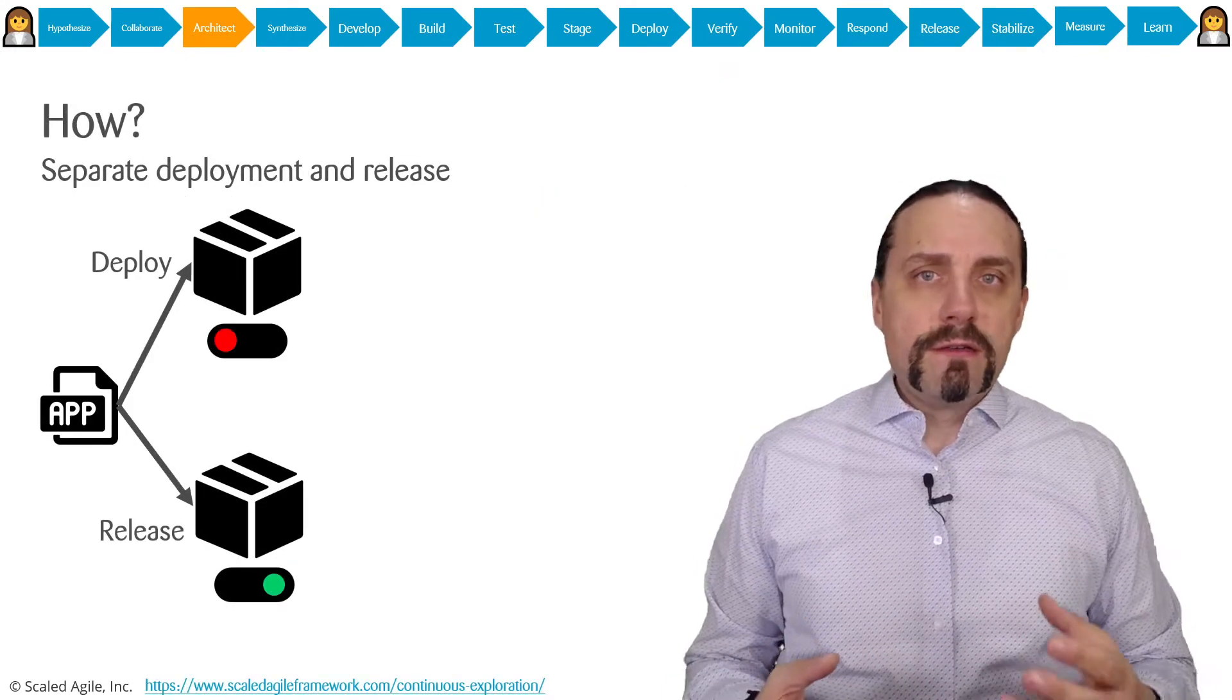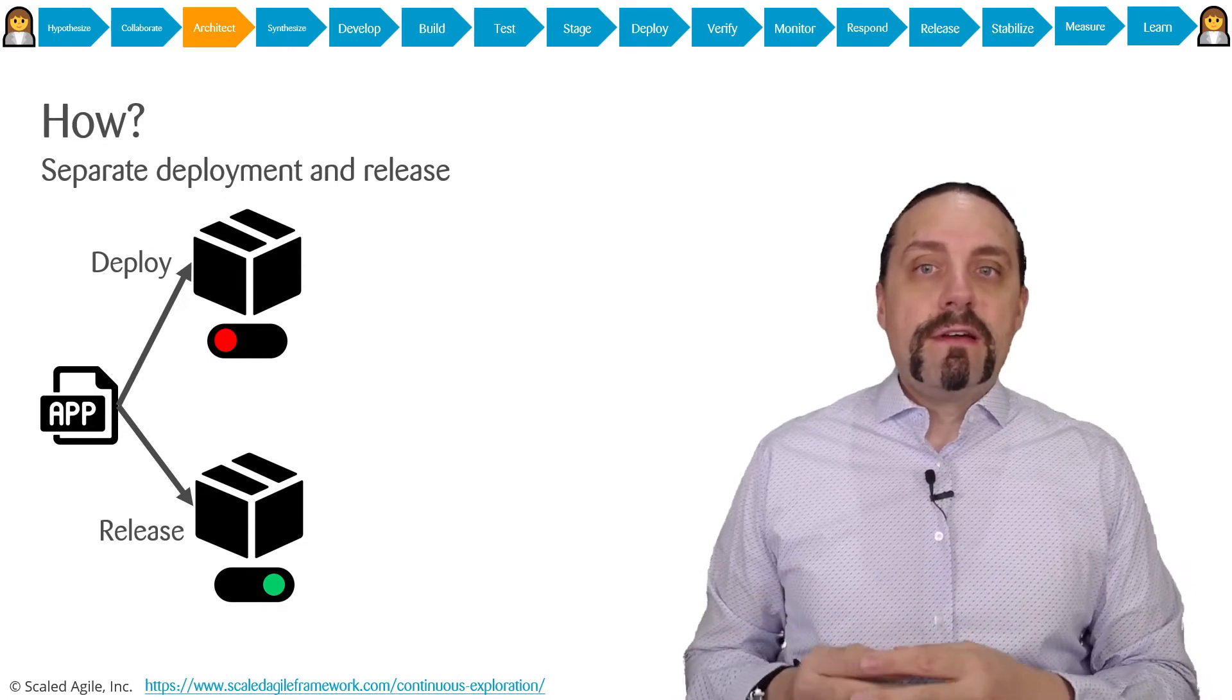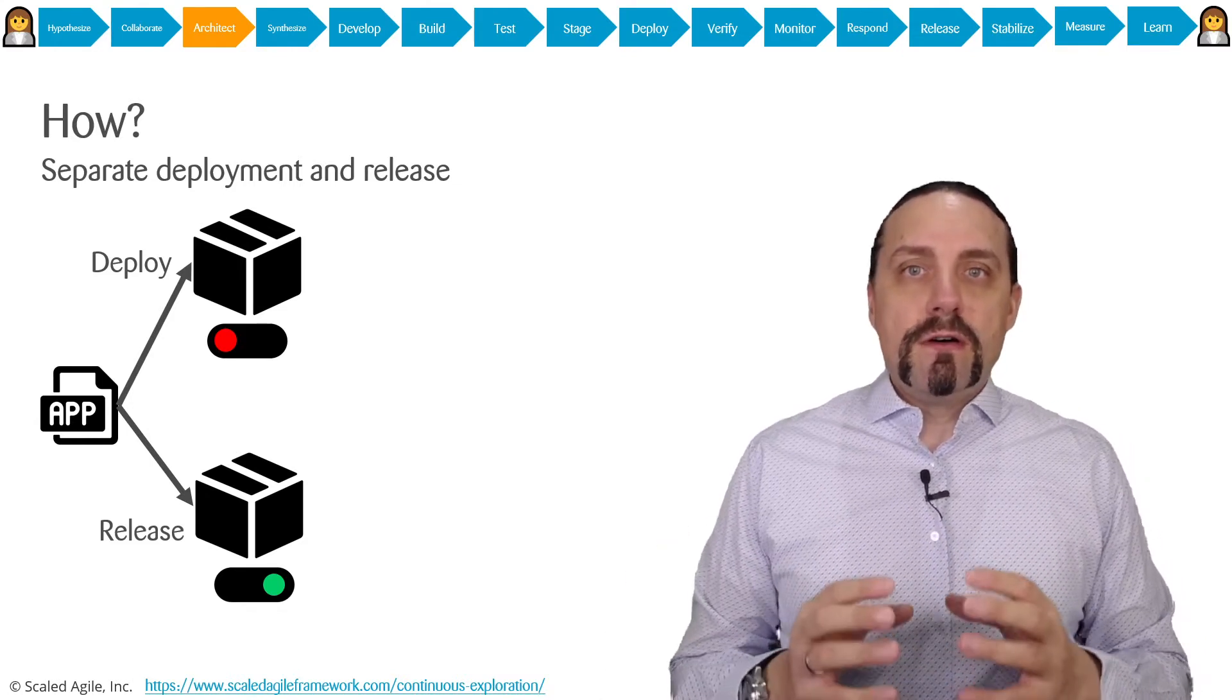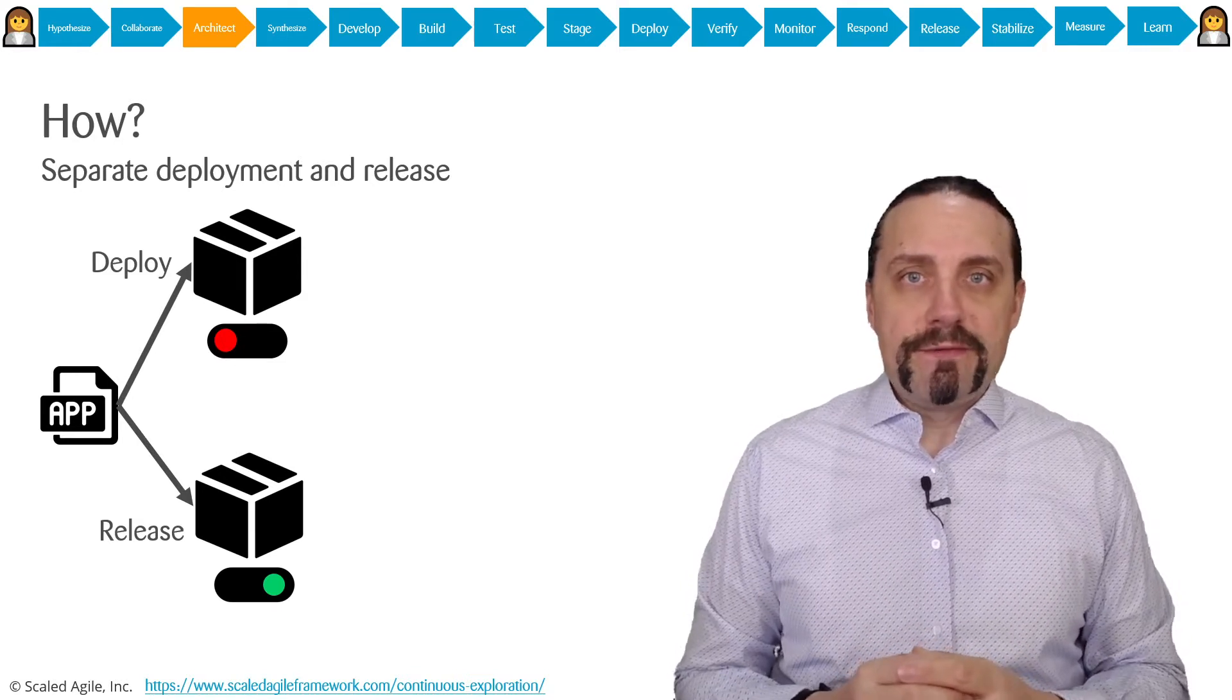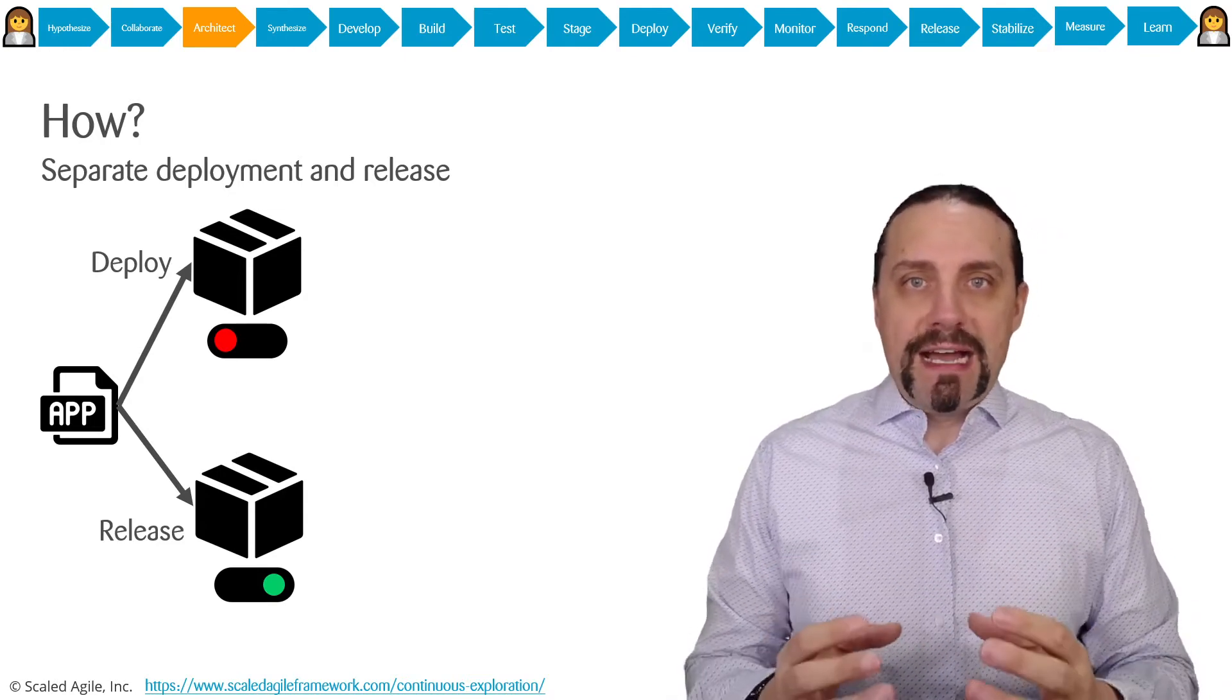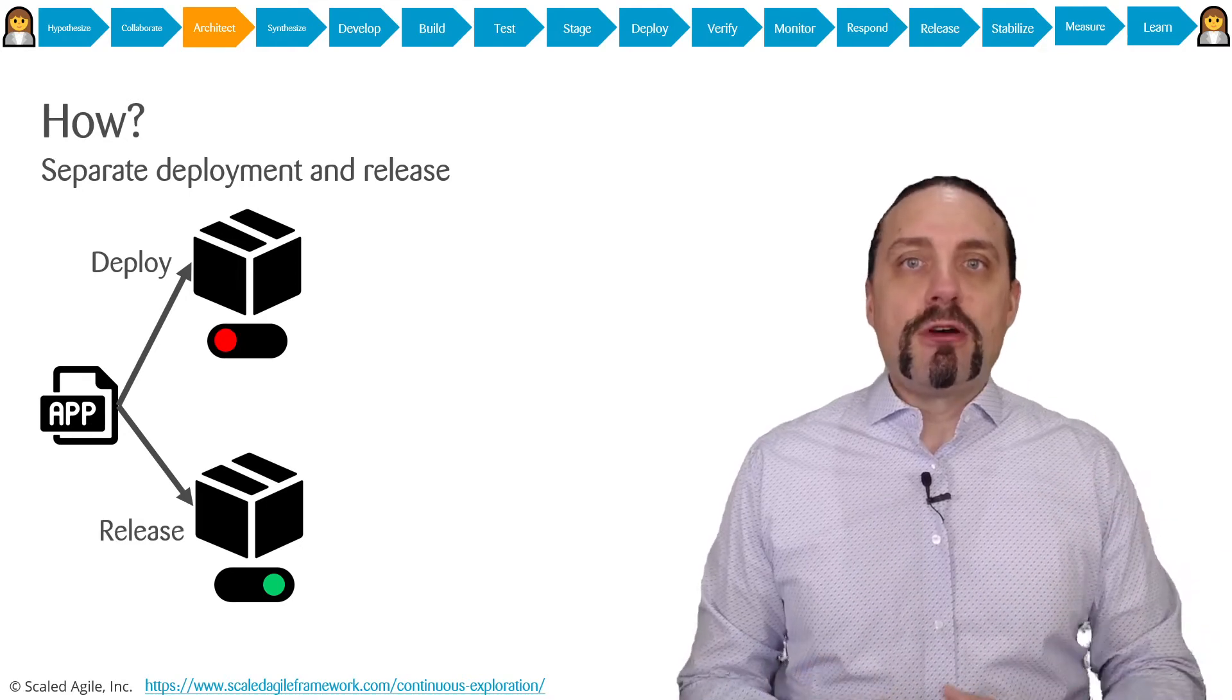How do we continuously deliver value? We do that with separation of deployment and release. This is one of the fundamental concepts in DevOps. The act of deploying is bringing compiled code into production with a feature toggle off. This is a deployment.